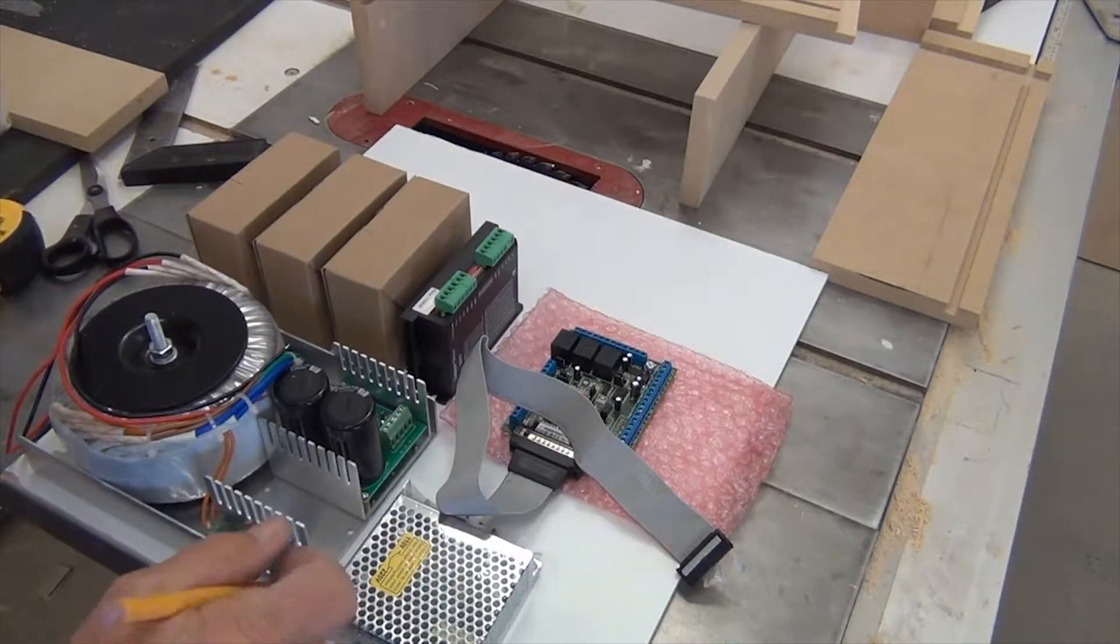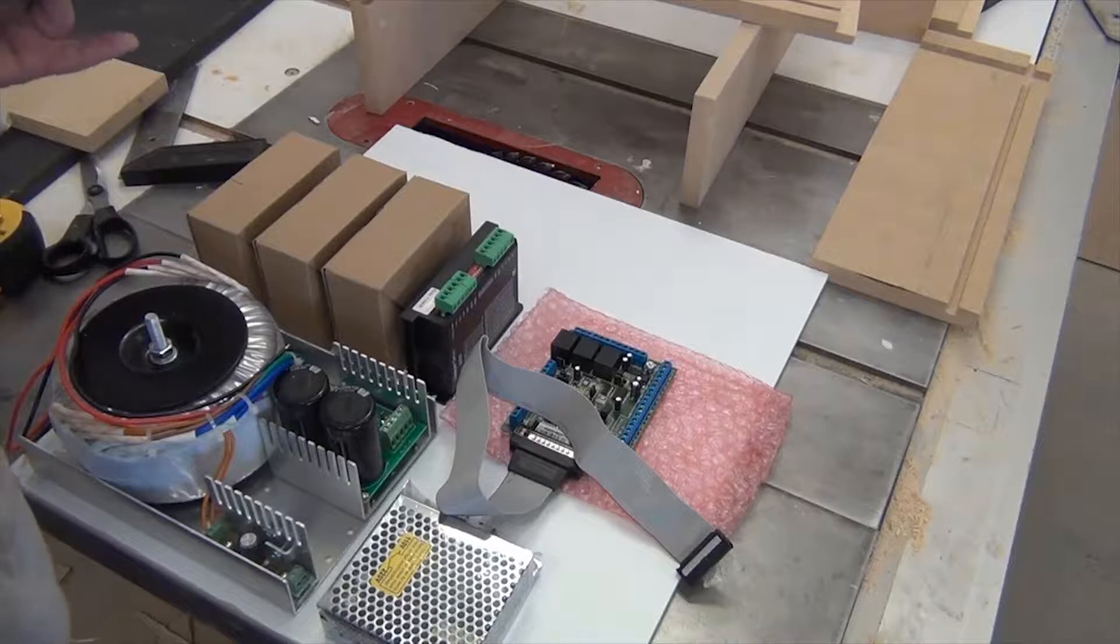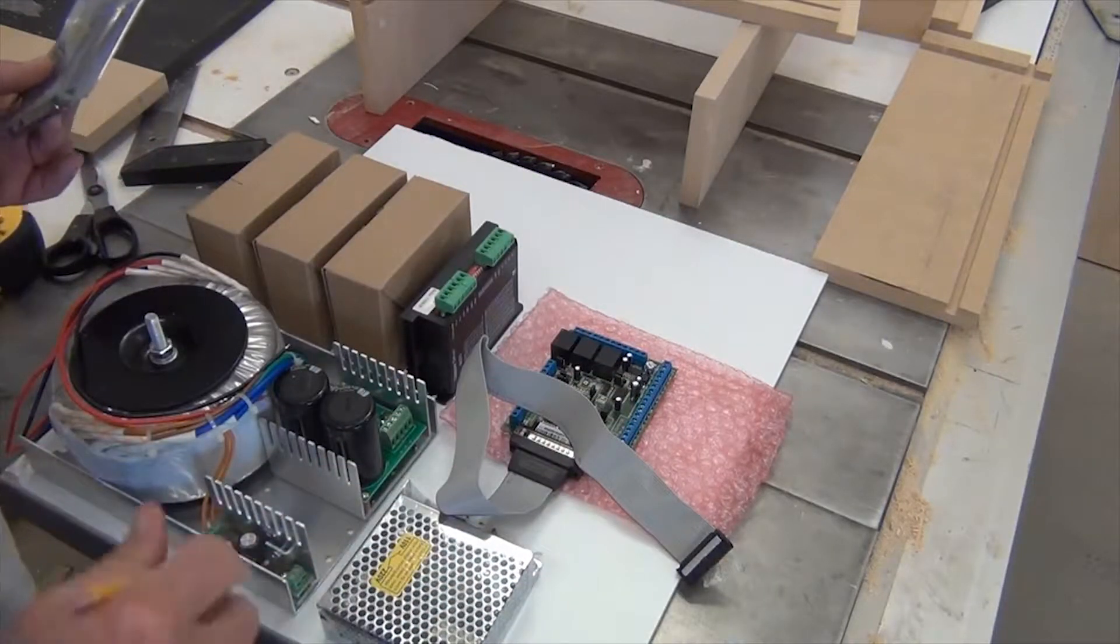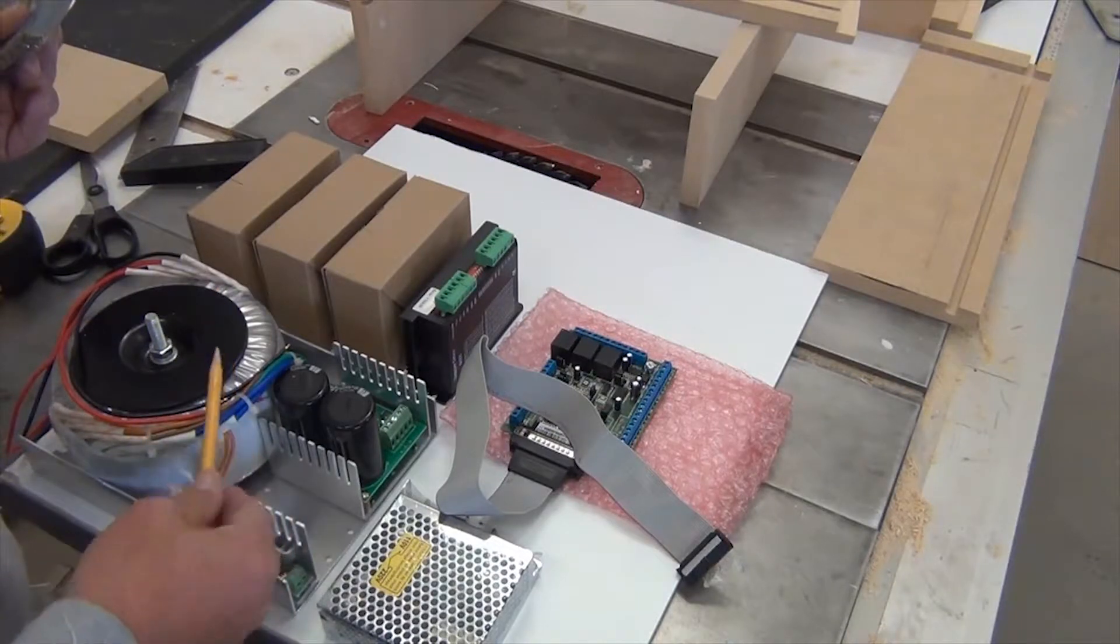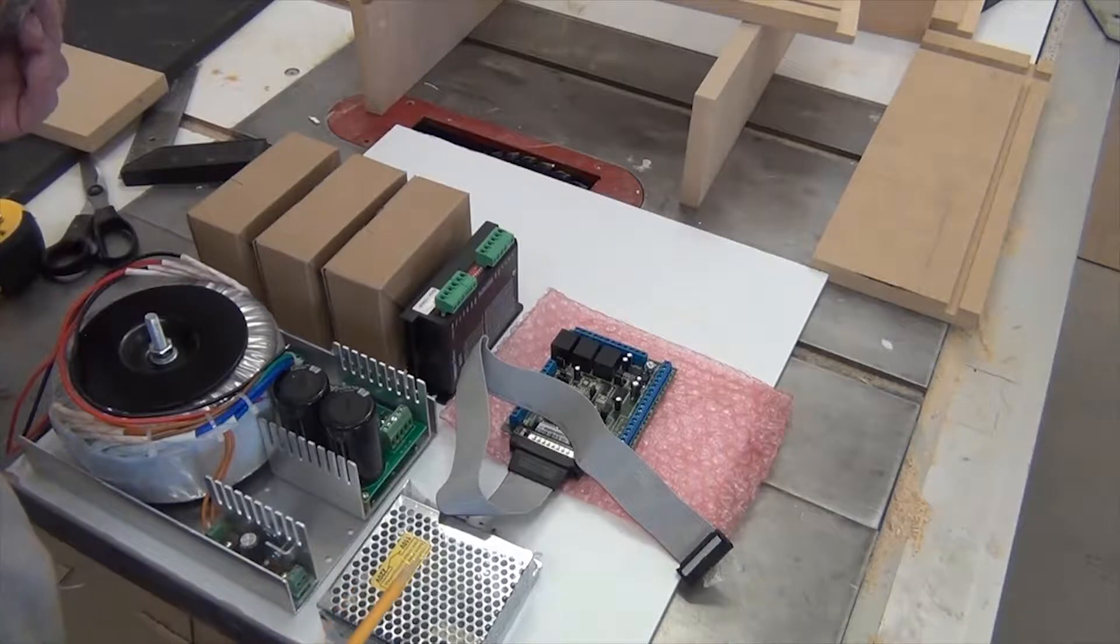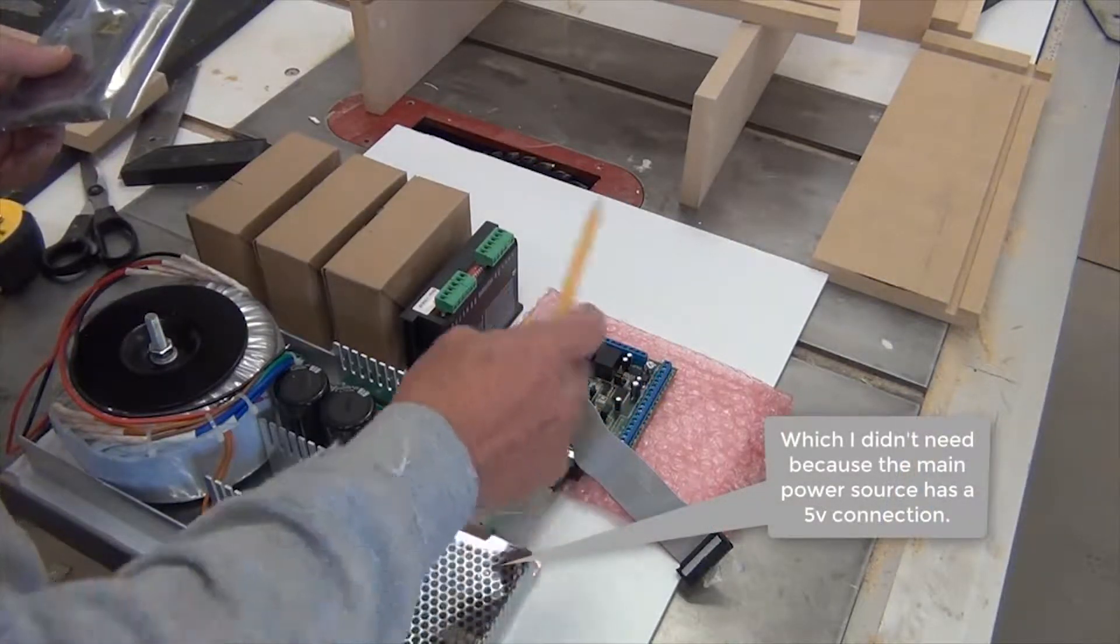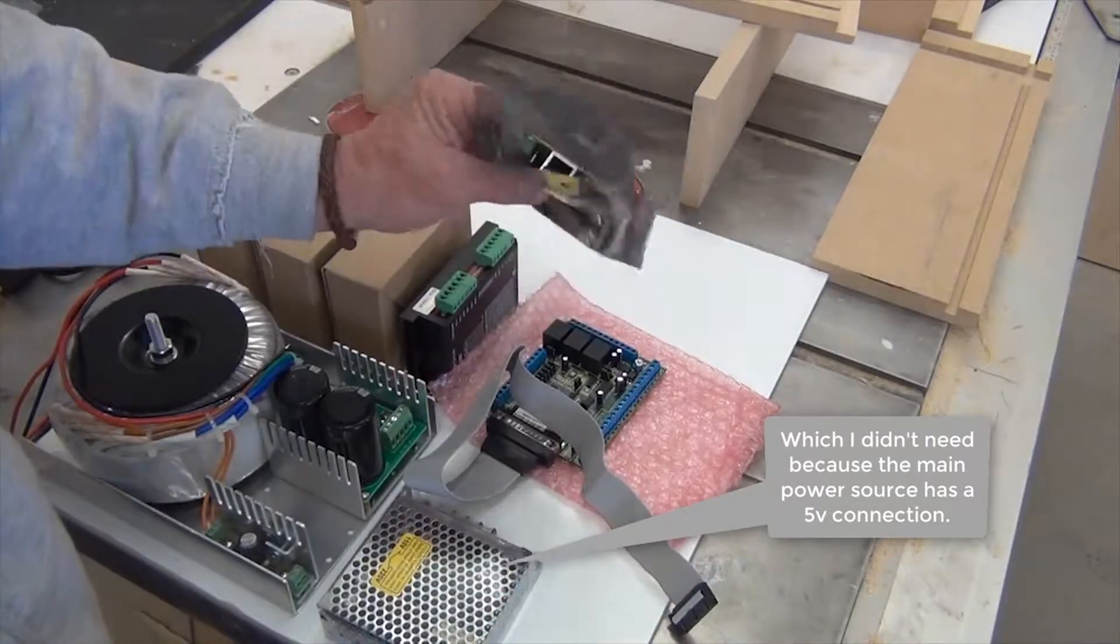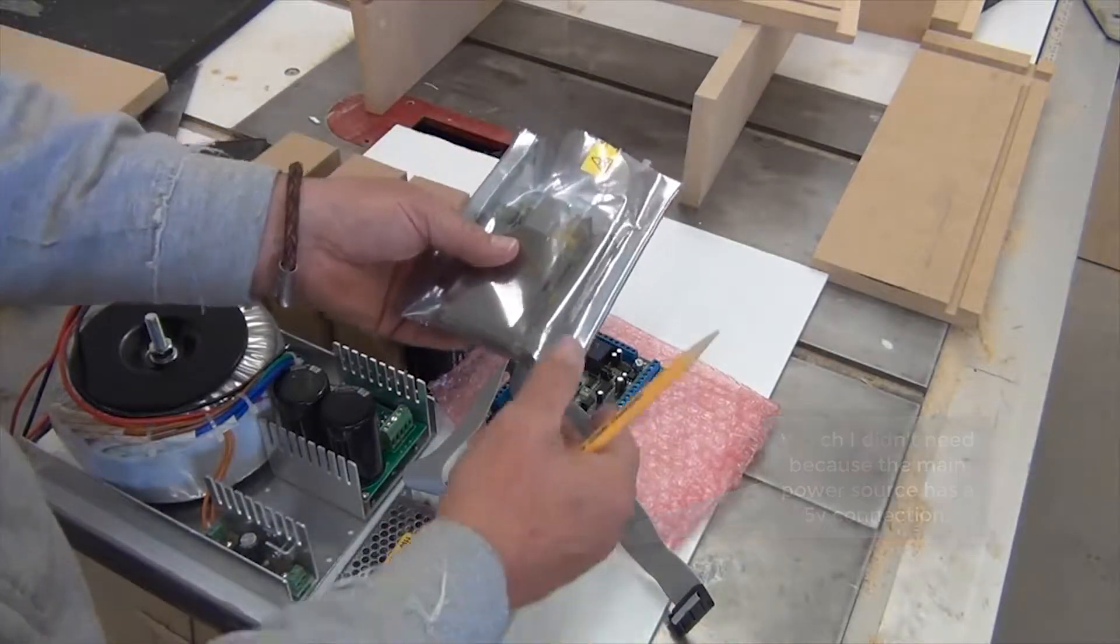So to determine how big my controller box has to be, I took a quarter inch piece of MDF and I laid out all my components on it. This is my overkill power source, this is my little five volt power source that runs with the controller board here. That's the breakout board, and then in this bag, which is still in the static bag and I don't want to take it out,